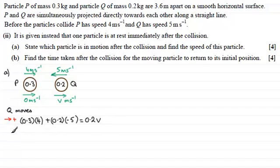So just a question of simplifying this and seeing what we get. 0.3 times 4 is 1.2 minus 0.2 times 5, that's minus 1. That leaves me with 0.2. 0.2 equals 0.2v. And if I now divide both sides by 0.2, v is going to equal 1.